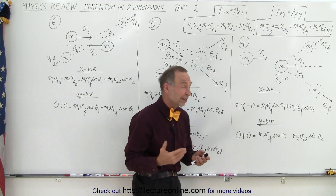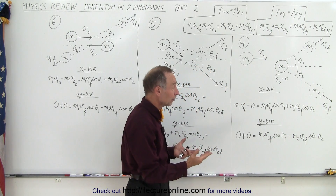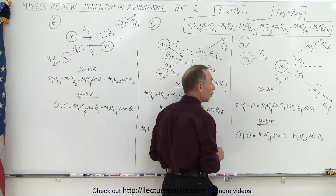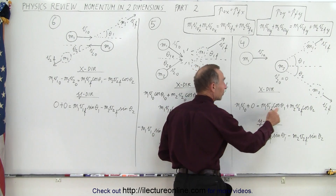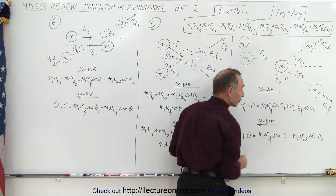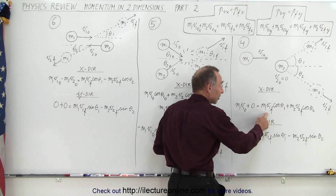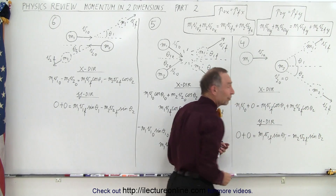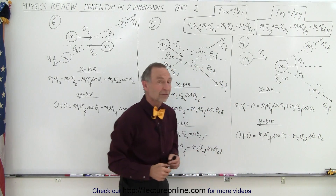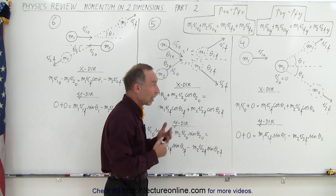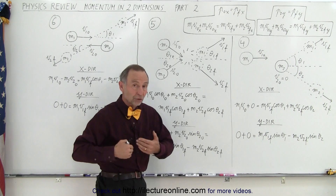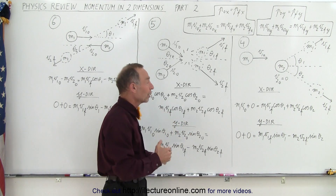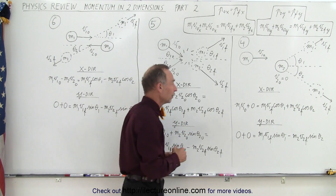So typically what they will do is give you both angles and ask you to find the final two velocities, or give you the final velocities and ask for the angles, or give you one of the velocities and one of the angles, and you're supposed to find the second velocity and second angle. How do you solve that with two unknowns? Well, you have an equation in the y direction as well.